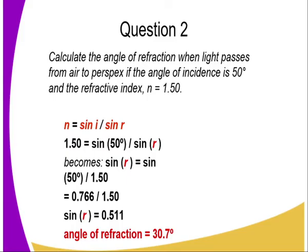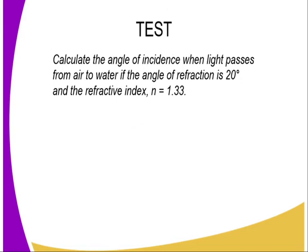Once again, Snell's Law, n equals sine i over sine r. We substitute into our formula appropriately and when we solve this, this gives us an angle of refraction to be 30.7 degrees. So did we get to understand the concept of this lesson?